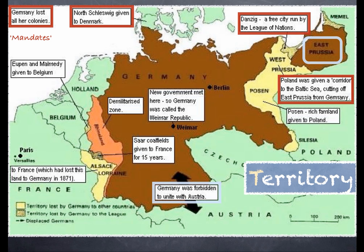Looking to the south of Germany, Germany was forbidden to unite with Austria. Austria was a new country created by the Treaty of Versailles and was ethnically German - German speaking. The treaty makers were worried that if Germany united with Austria - the German term for this being Anschluss, or union with Germany - it would create a German state that was effectively just too powerful.